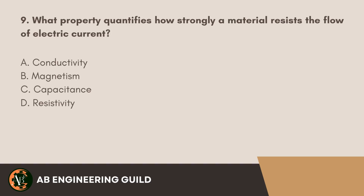Question 9: What property quantifies how strongly a material resists the flow of electric current? A. Conductivity. B. Magnetism. C. Capacitance. D. Resistivity.